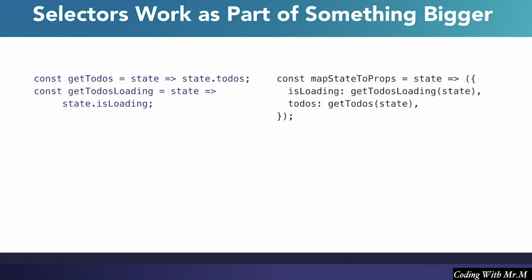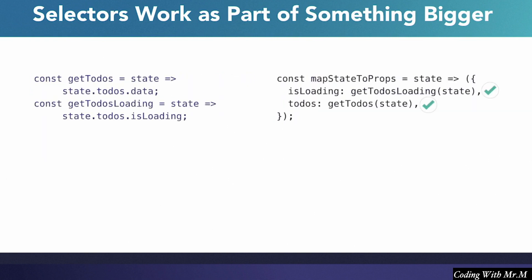What we could do instead is create some simple functions called getTodos and getTodosLoading, and use these functions in the MapStateToProps for all our components. If we had created and used these functions from the start, incorporating the isLoading property into our to-dos reducer and moving the actual to-dos array into todos.data would be a simple one-line change. It might seem silly to create separate functions just to avoid a global find and replace, but actually selectors are part of something bigger.